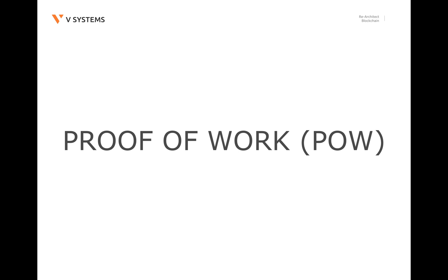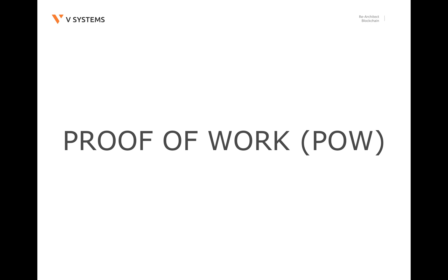Proof-of-work is the most well-known consensus algorithm, specifically for its use in Bitcoin. Consensus is reached by the miner of a block calculating some computationally difficult puzzle. Therefore, the probability a node verifies a block and obtains mining rewards is proportional to its computing power.